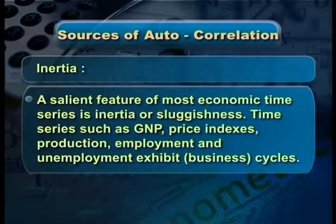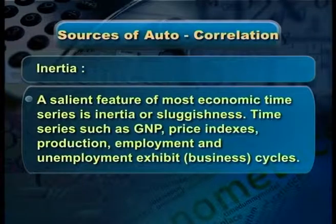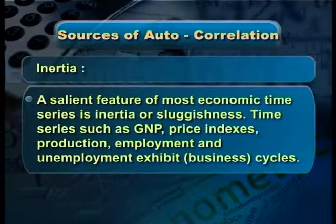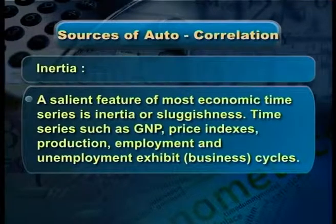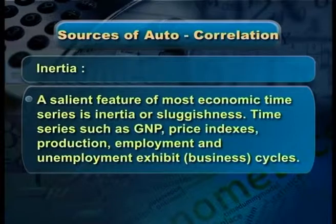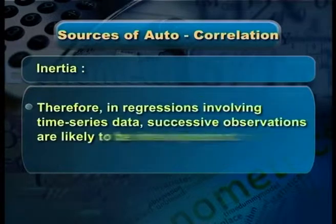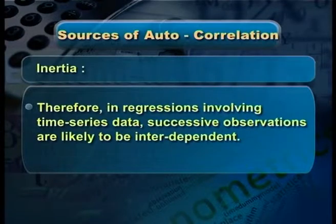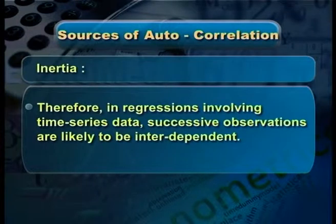The first cause is inertia. The salient feature of most economic time series data is sluggishness. As we all know, time series such as GNP, price indexes, production, employment, and unemployment exhibit cyclical patterns. In regressions involving especially time series data, successive observations are likely to be interdependent.